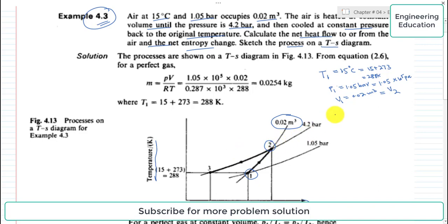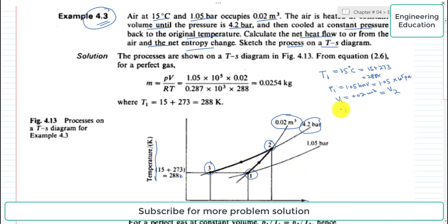From state 2 to state 3, the air is cooled at constant pressure of 4.2 bar. Along this line the pressure remains constant, and we return to the original temperature of 288 K. So T3 is equal to T1.